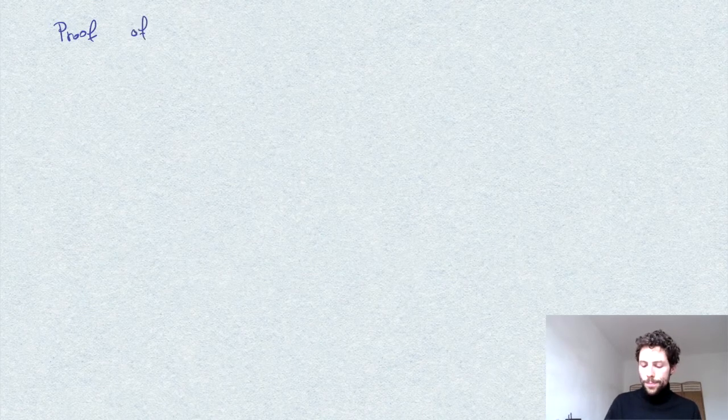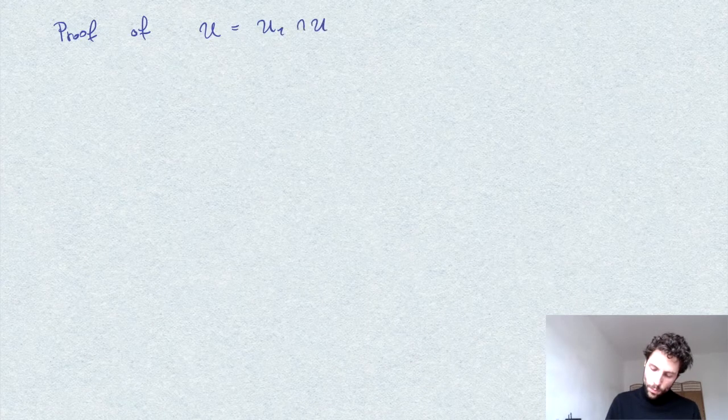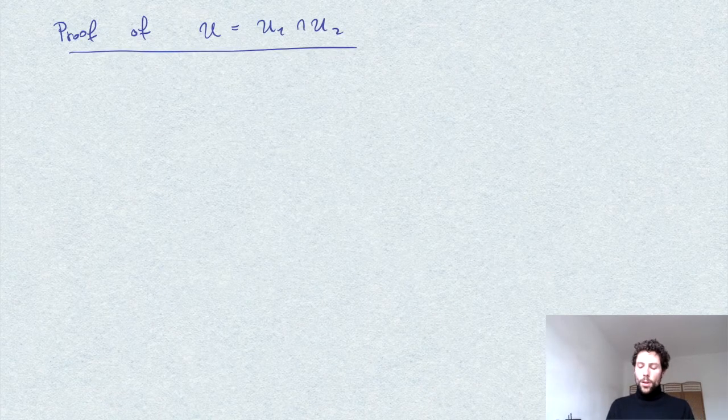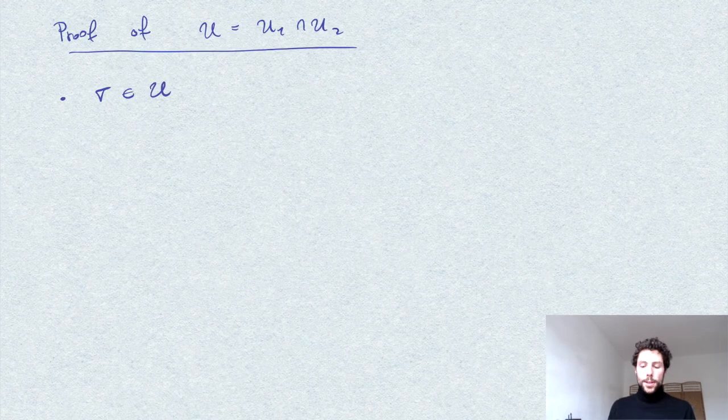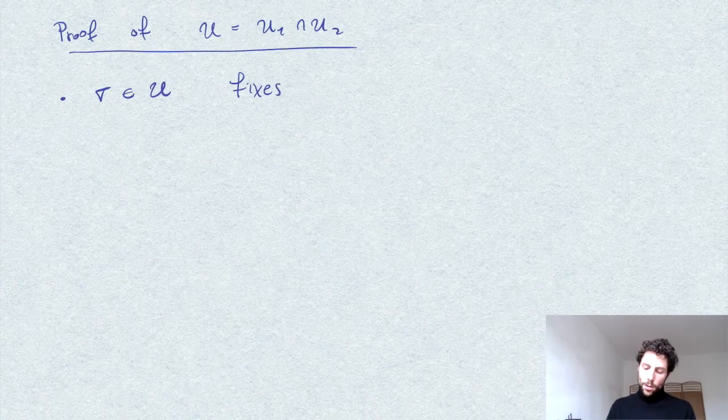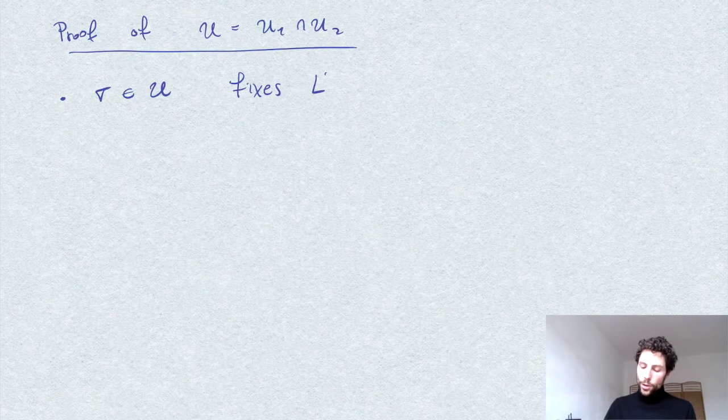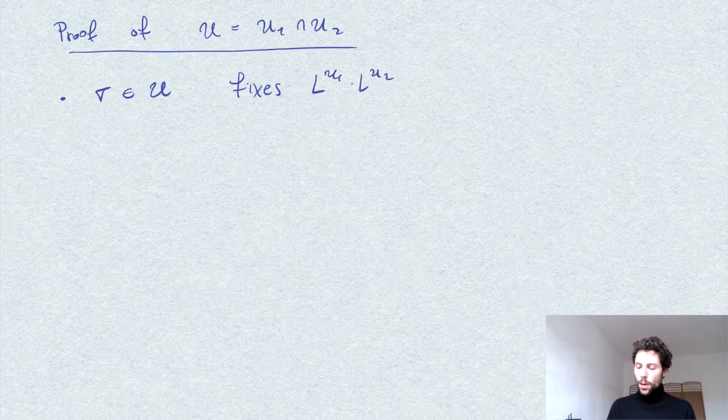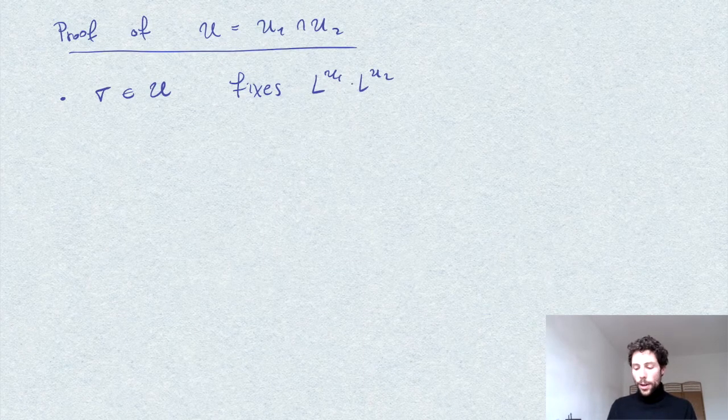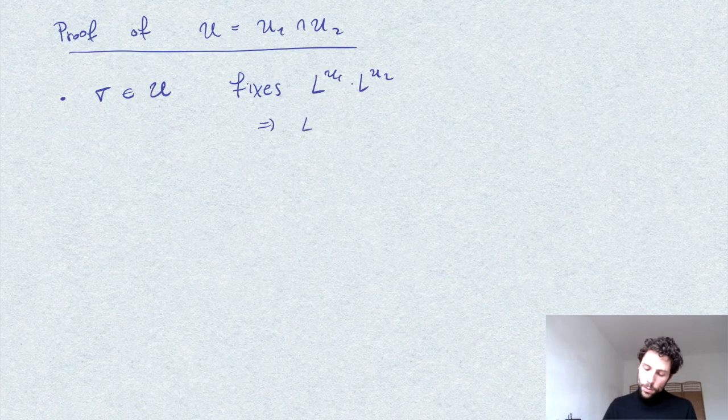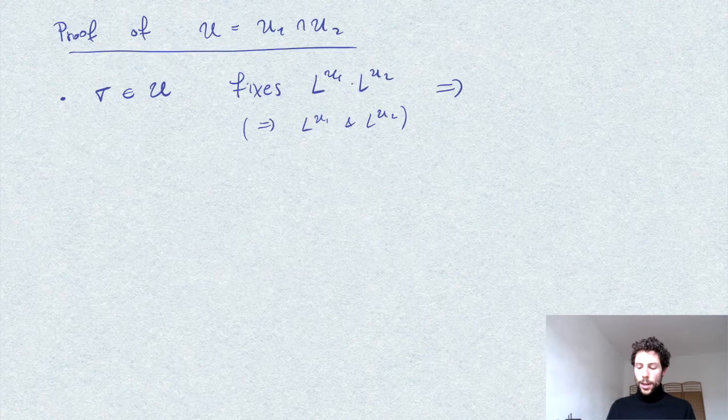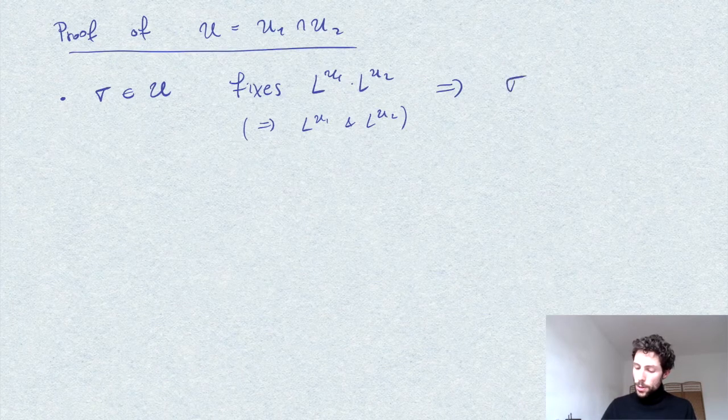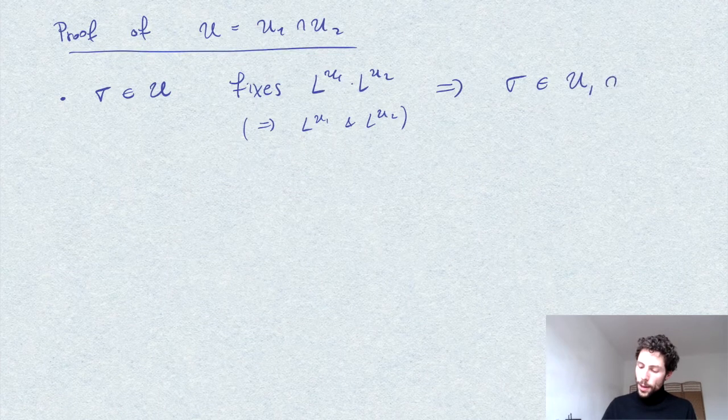So we only need to show, let's prove this identity. On one hand, if I have an automorphism in U, this means that sigma fixes the product L^U1 and L^U2. So in particular it fixes L^U1 alone and L^U2 alone. Therefore it fixes both. In other words, sigma is both an element of U1 and U2.